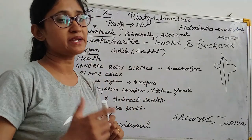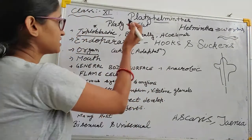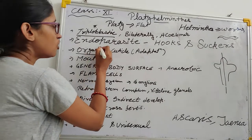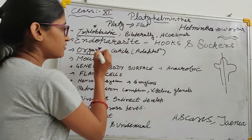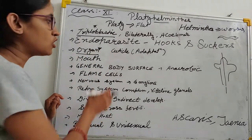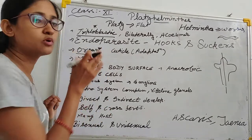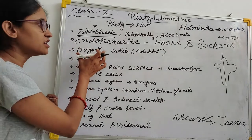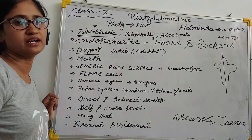Platyhelminthes is triploblastic. The organ level of body organization has developed — the body grade is organ level.